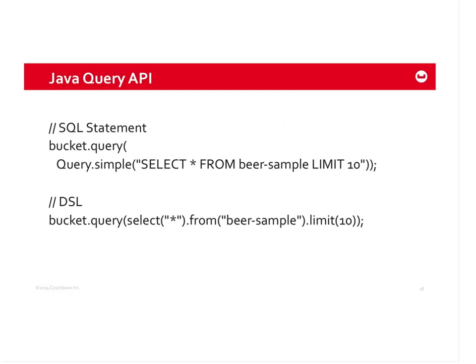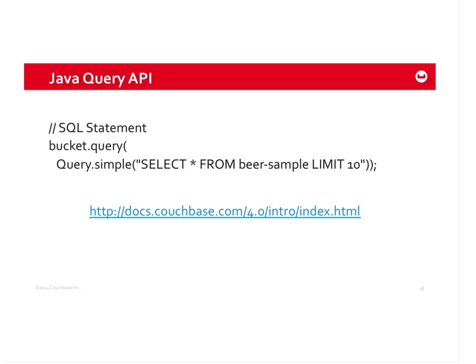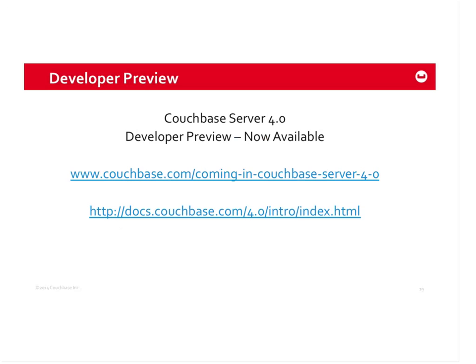You have two approaches: submit a SQL string or use the DSL to build your query. Everything you can do in a relational database from a query perspective is what we're doing, but applied to a document database. We just released a developer preview last week. You can check out the Couchbase coming-soon page for more on multidimensional scaling, SQL for Documents, and ForestDB, or go straight to the documentation to download and get started.